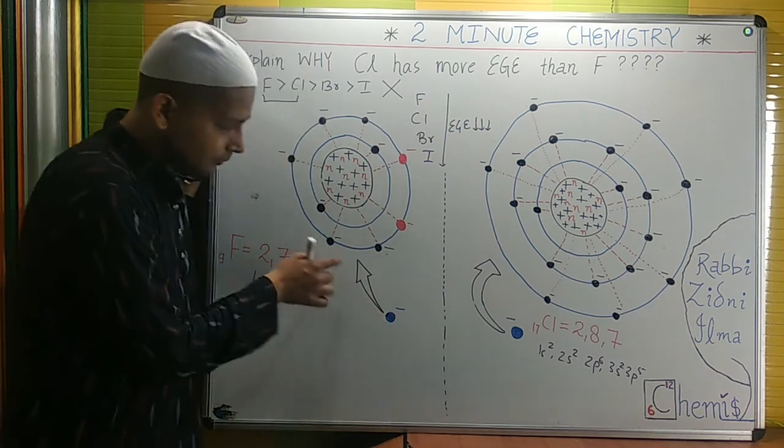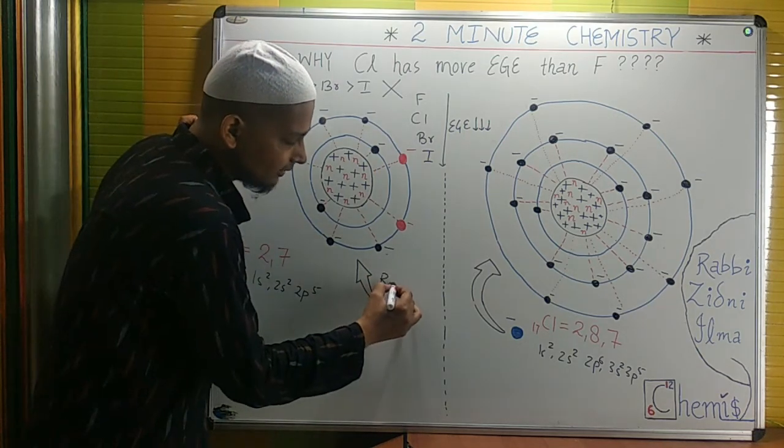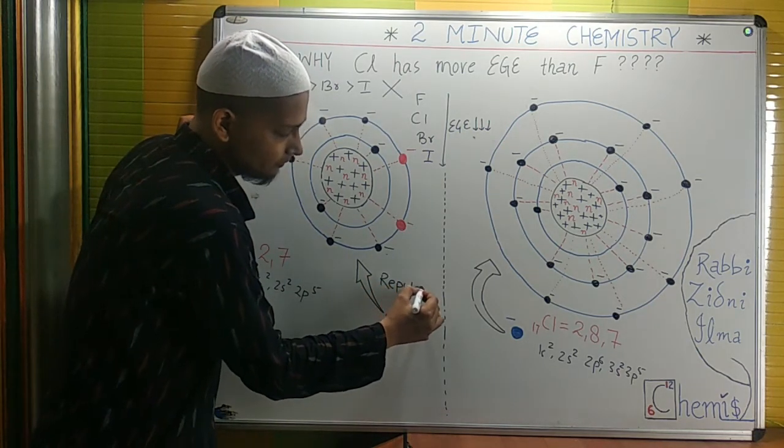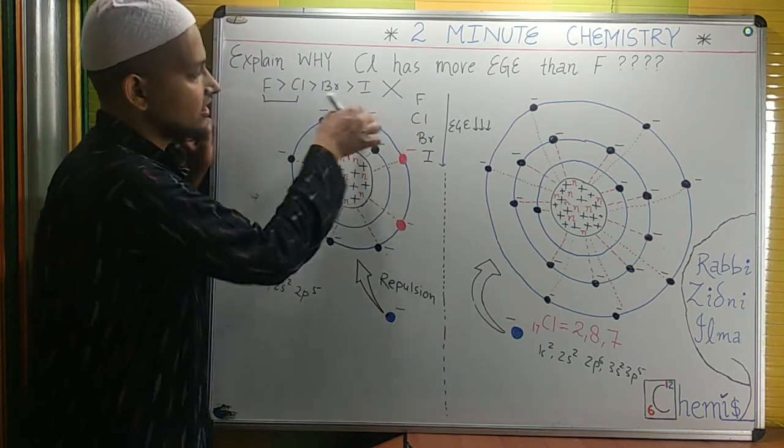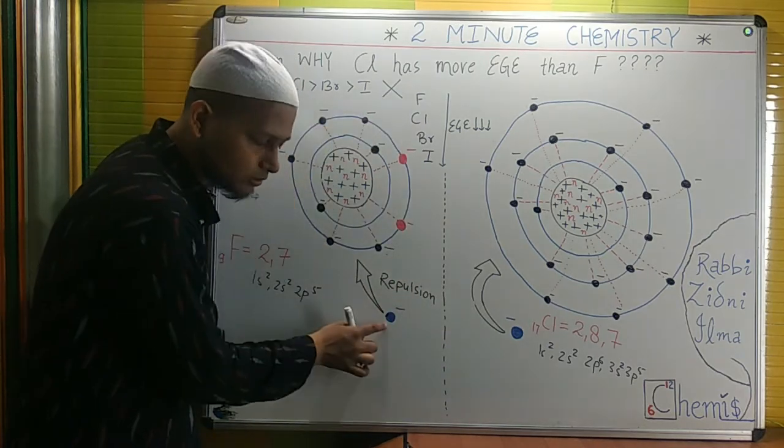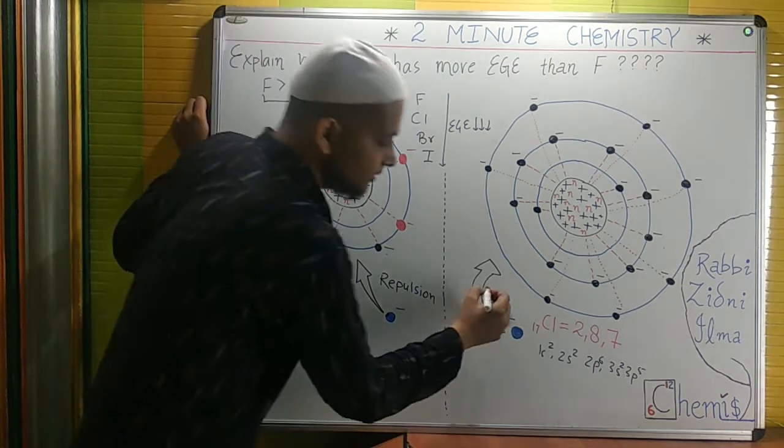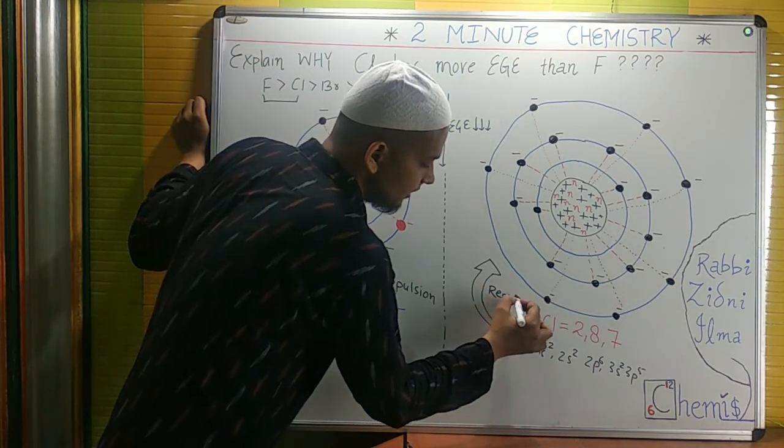Now, if this electron approaches here, there will be an electrostatic force of repulsion because these electrons are negatively charged and this one is also negatively charged. The same repulsion goes for this one also.